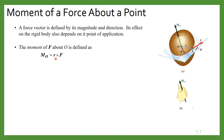So MO will be equal to R cross F, where R is the distance between the point of application and the axis. So R cross F is the moment of F about O.